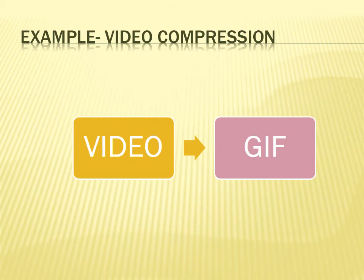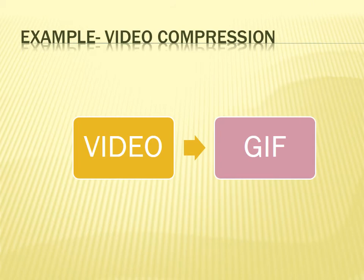Similarly, here is an example of video compression. In today's world you must be using WhatsApp regularly, and you must have sent or received jokes as GIFs. If you look at a GIF, the video is not really smooth — the frames required to make those videos are very few and it is a short video. This GIF is actually a compressed version of an actual video. It has been compressed because it is easier to send and receive, and takes lesser time to play. GIF is a great example of video compression.